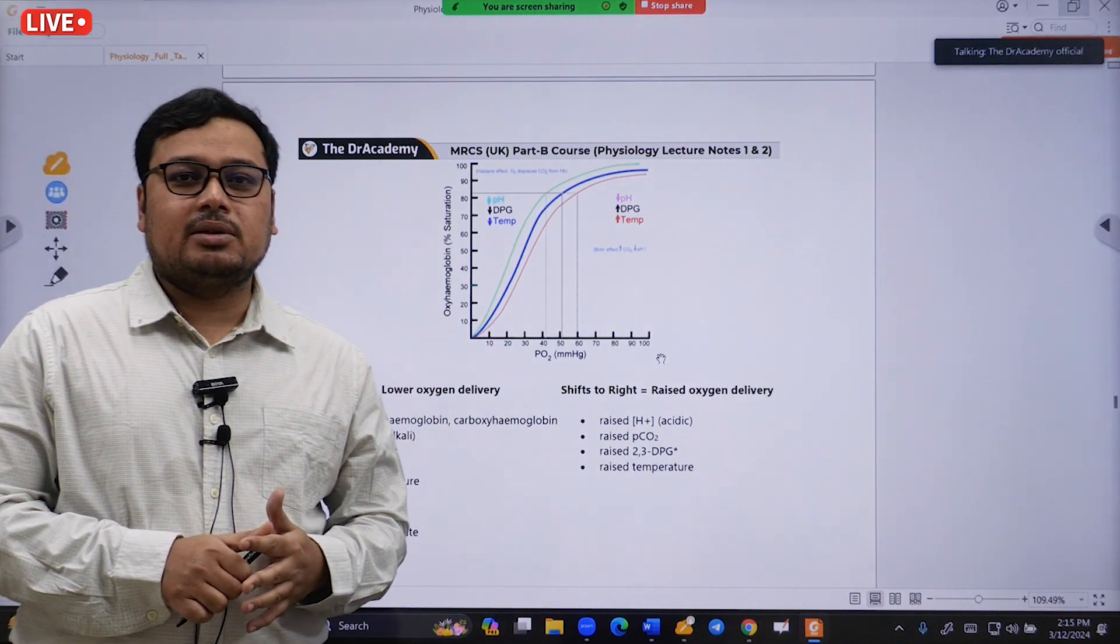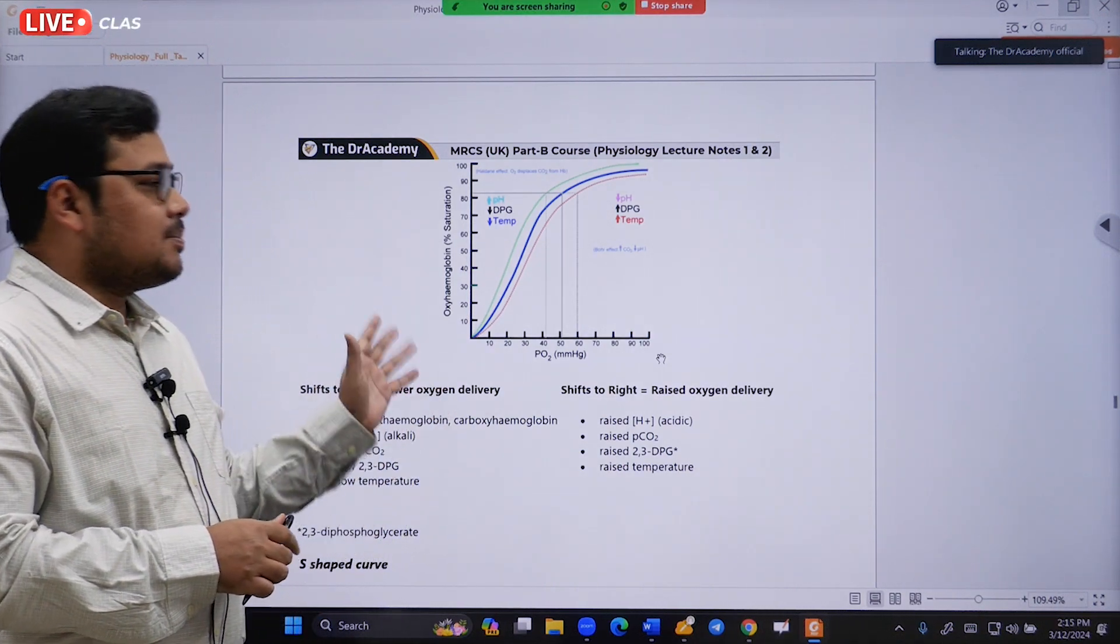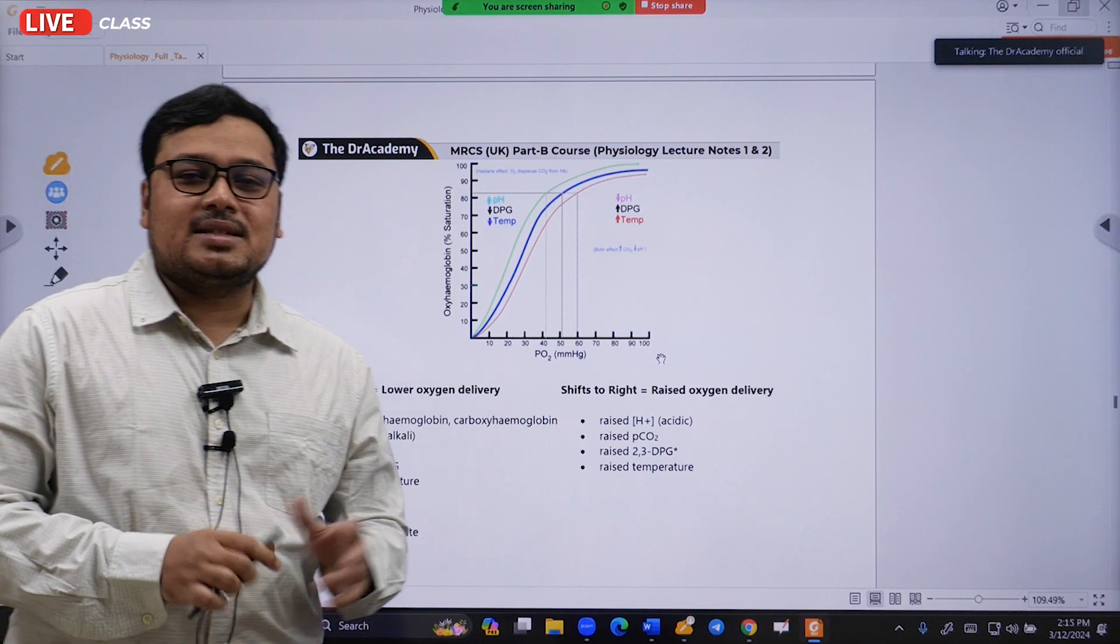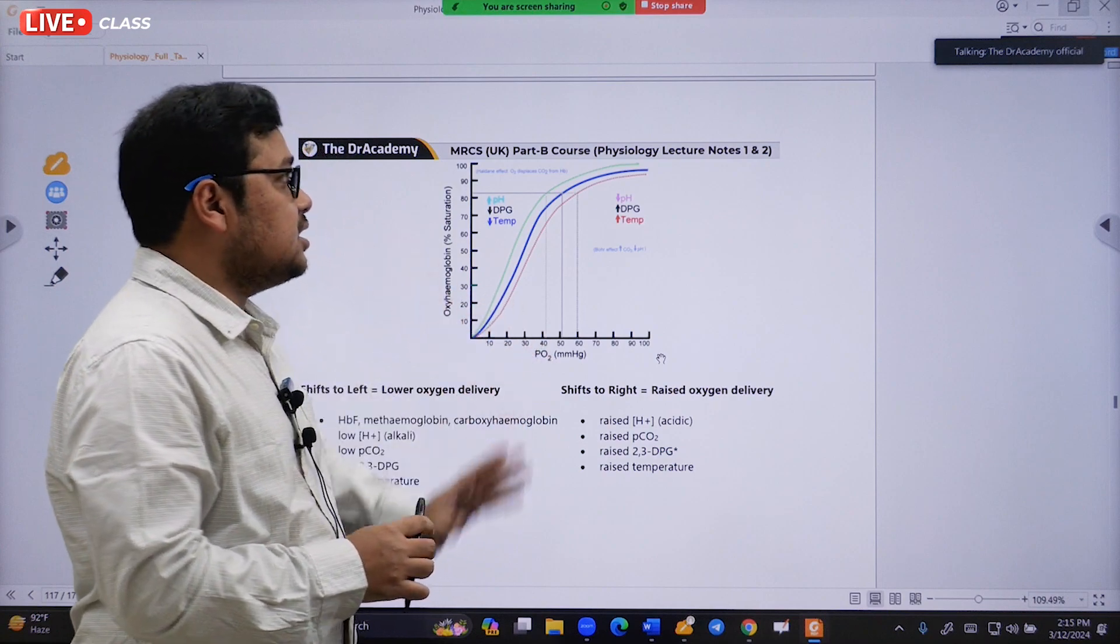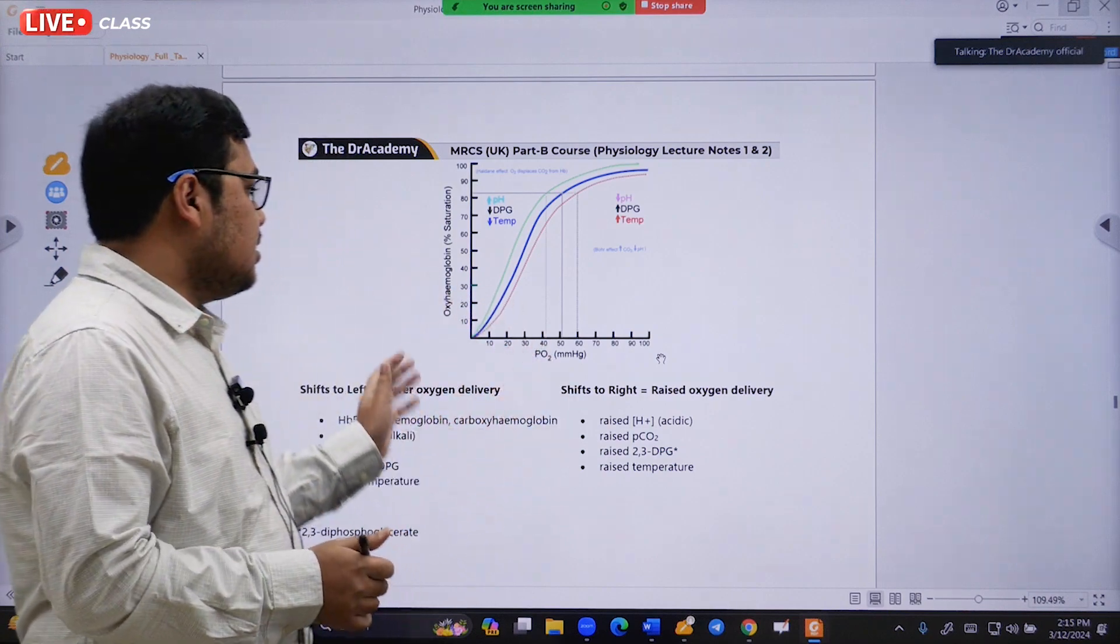The most important topics we will discuss about the respiratory system - one important question repeated in MRCS Part B examinations is the oxygen dissociation curve. So what does it mean?